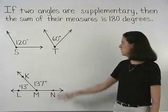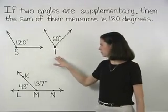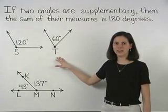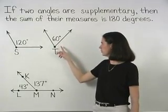For example, in the first diagram shown, angles S and T are supplementary because the sum of their measures, 120 plus 60, equals 180.